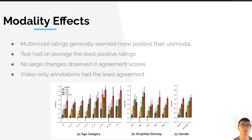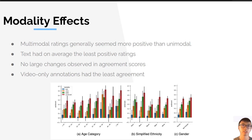We also found that multimodal ratings on multimodal data generally seemed more positive than unimodal ratings. We also found that text had, on average, the least positive ratings. However, we found that there were not really any large changes observed in agreement scores between the modalities and the multimodal data. Video annotations tended to have the least amount of agreement out of all of them.